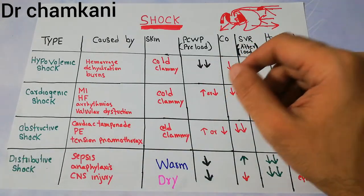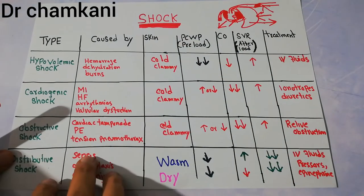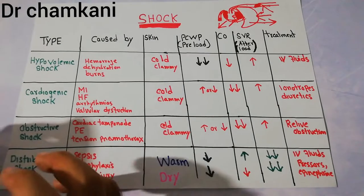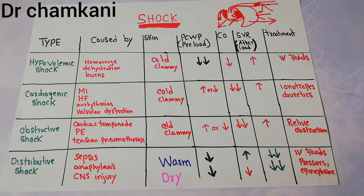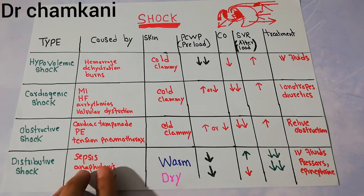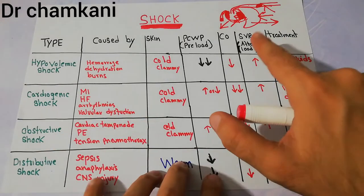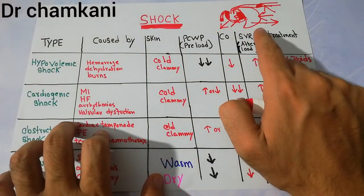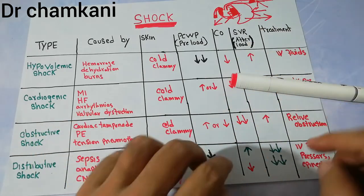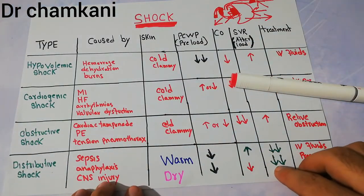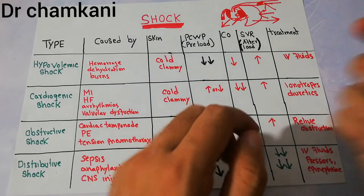The final type is distributive shock, which occurs in sepsis, anaphylaxis, or CNS injury. Sepsis is the spread of infection throughout the body. Anaphylaxis is due to release of histamines — an immediate type one hypersensitivity response. CNS injury can cause decreased or depressed sympathetics. The key difference is that in sepsis and anaphylaxis, the skin is warm and flushed because there is vasodilation. This is a very important difference — the systemic vascular resistance is decreased, not increased.